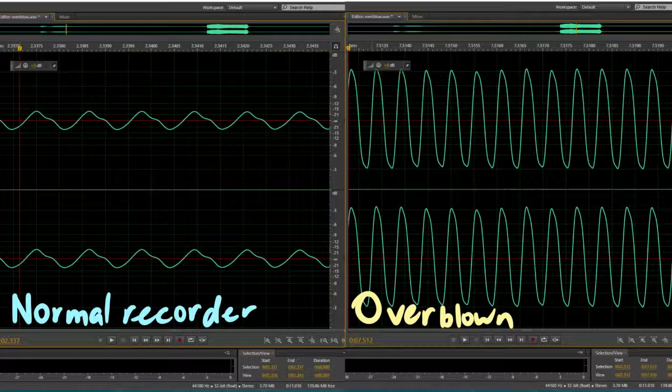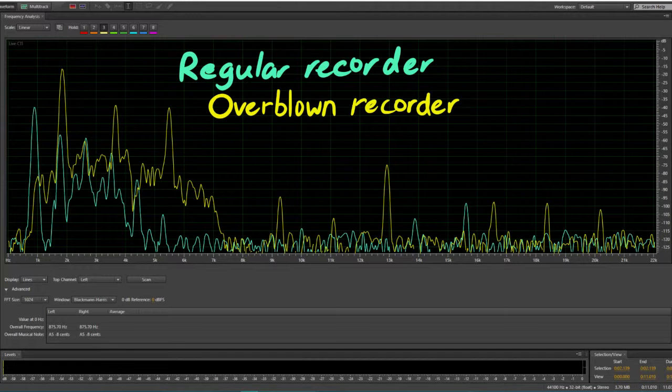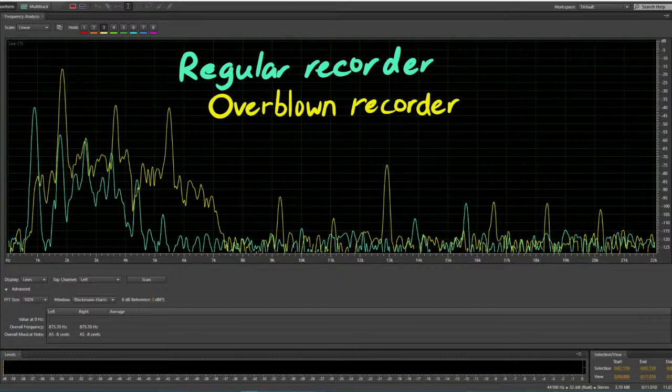If we compare these two graphs, we can see that the timbre of the overblown note is much smoother than the timbre of the normally played note. The amplitude is also much higher, so you'll get a very loud sound. This is a graph showing a note being played on the recorder normally, in blue, and the same note being overblown in yellow. As you can see, the fundamental frequency of the yellow is much less distinct, and the second harmonic is more prominent than when it's being played normally.